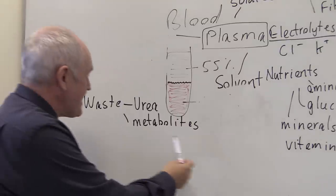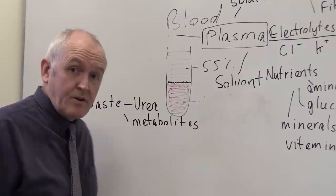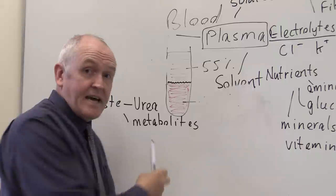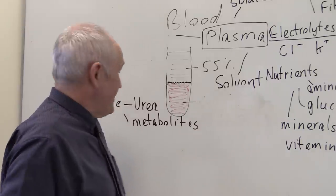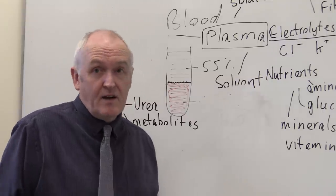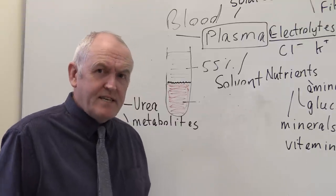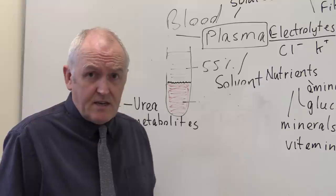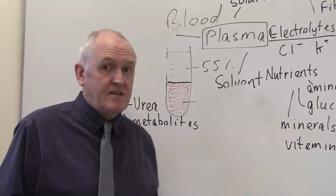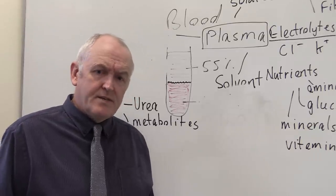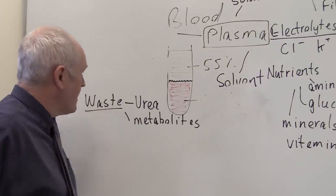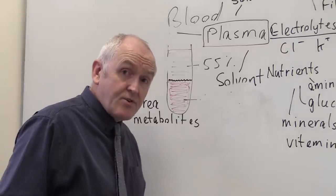The liver makes metabolites — breakdown products of larger molecules — more soluble so they can be readily excreted in the urine. The only way waste products get from the liver or cells to the kidneys, if they are renally excreted, is by being transported in the blood plasma. So waste products are a key component of plasma. The plasma also contains the endocrine hormones.